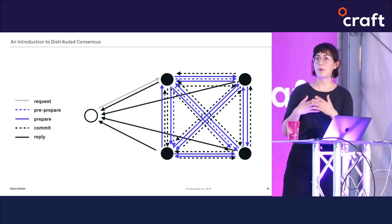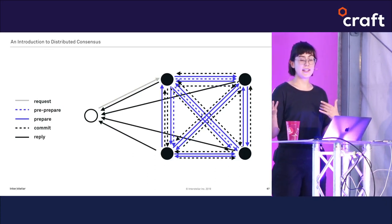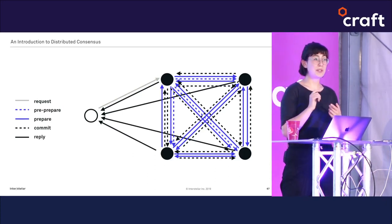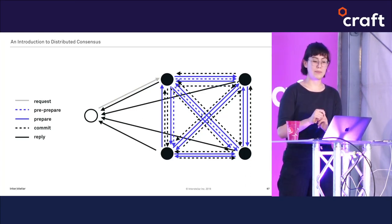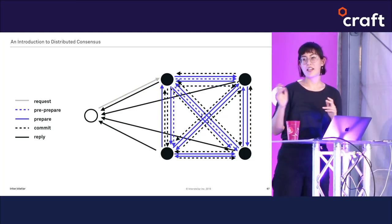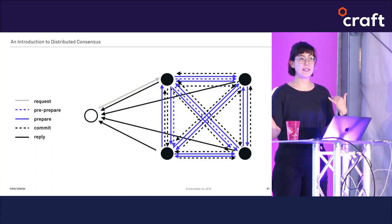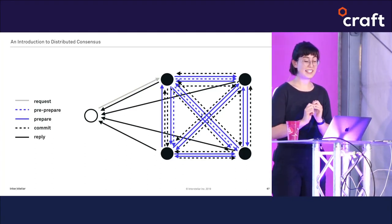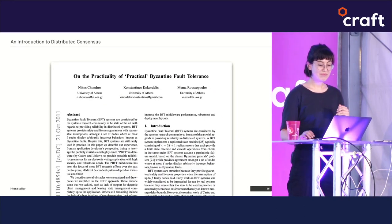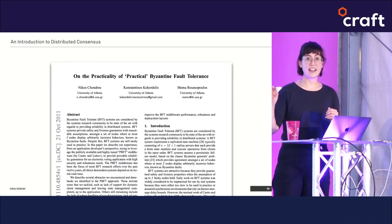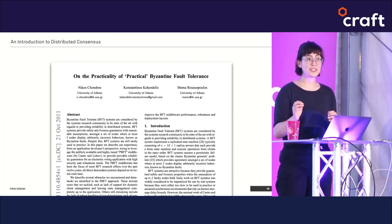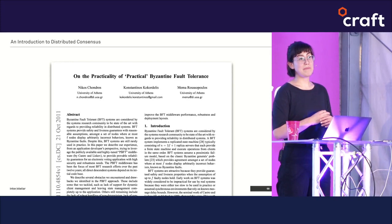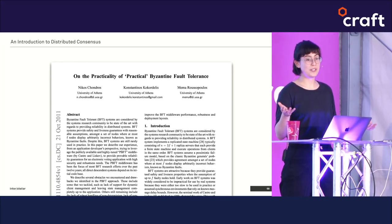This diagram shows all of the messages that need to be sent in order to tolerate a single Byzantine fault during a single vote. It's complex enough that another paper, which puts "practical" in scare quotes, was published 12 years later warning people that PBFT might just be too tricky to use in production. I won't go into much detail on PBFT partly because it's complex and partly because there are other interesting solutions to the Byzantine generals problem.